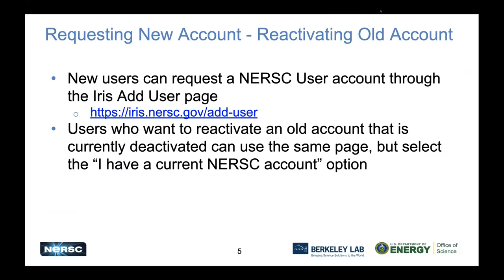For user accounts, if you don't have a NERSC user account already, you would go to iris.nersc.gov/add-user to request one. If you already have a previous NERSC account that may be deactivated, you can go to that same page, select the option that says 'I have a current NERSC account,' enter your NERSC username, and select a project to join. That will send a request to the PI to let you join their project.